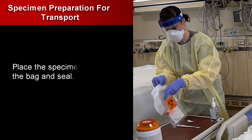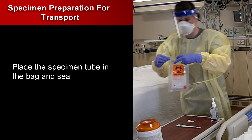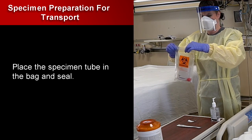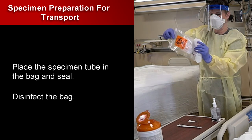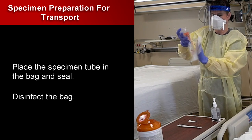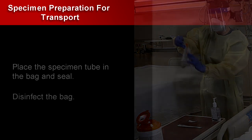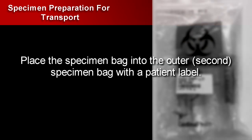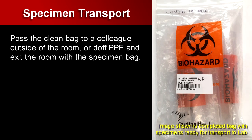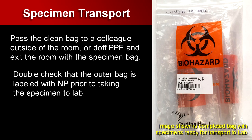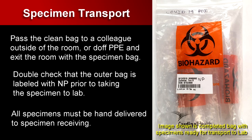Place the tube in the specimen bag and seal. Then place the specimen bag into a second specimen bag with a patient label, and disinfect the specimen bag with a disinfectant wipe. Perform hand hygiene. Pass the clean bag to a colleague outside of the room, or doff PPE and exit the room with the specimen bag. Double check that the outer bag is labeled with NP prior to taking the specimen to the lab. All specimens must be hand delivered to specimen receiving.